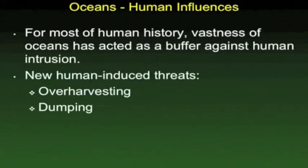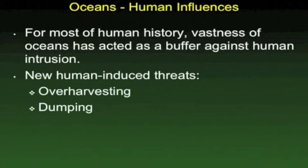We used to think the ocean was so big that we could dump anything into it without causing problems. But now with our human population pushing 7 billion, we are having an impact on the oceans. We're harvesting too many of certain fish species, not allowing them to reproduce and maintain their populations. We're also dumping enough material that the littoral zones are becoming polluted, which is particularly impacting the coral reefs.